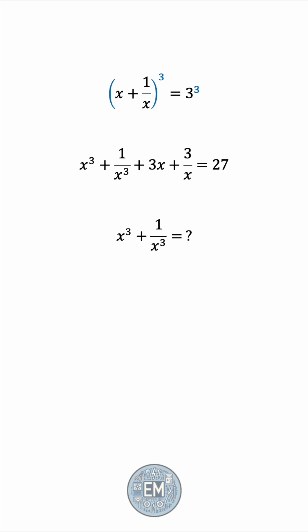But we have an extra 3x plus 3 over x. So how do we deal with this? How can we use the condition given, the fact that x plus its reciprocal is 3? Well, we can factor out a 3 from the last two terms and we get x plus 1 over x between the pair of brackets. This must be 3 by the given condition, so this becomes 9.